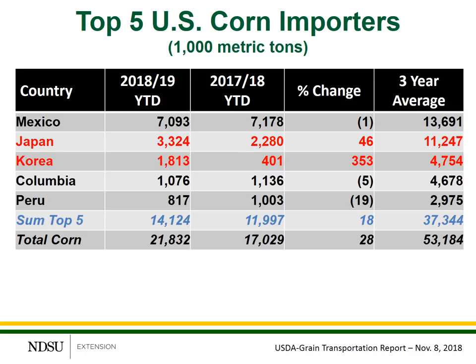I'd also like to highlight a few numbers on this table — in particular, the export sales of U.S. corn into Japan and Korea. Looking at the 2018-19 YTD column — year to date — and comparing it to the 2017-18 YTD column representing this time last year: sales into Japan have increased 46% relative to the pace we had this time last year, and sales into Korea have increased 353% relative to last year's pace. Our corn export sales into the Asian markets have been relatively strong this year compared to last year.